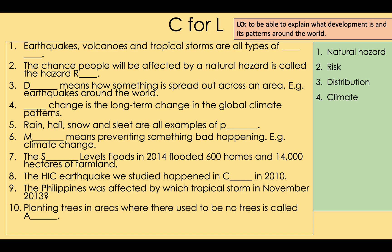Number four refers to the patterns of temperature and rainfall around the world. Number five: rain, hail, snow, and sleet are all examples of precipitation — remember that word, it's important and comes up in the exam a lot. Number six: mitigation means preventing something bad from happening, for example climate change, or making it less bad.